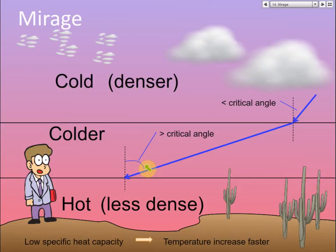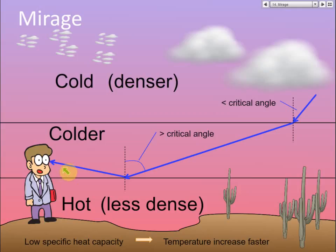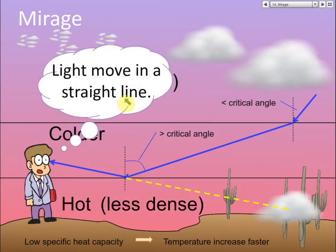If this angle exceeds the critical angle, and the light ray is moving from an optically denser to an optically less dense medium, then total internal reflection occurs. So the light is reflected instead of going downward — it reflects and goes to the eye of the observer. For the observer, we always assume that light rays travel in a straight line, because from a young age we perceive light as moving straight. So you would assume the light comes from below, and you see the image of the clouds near the ground — and that is the mirage.